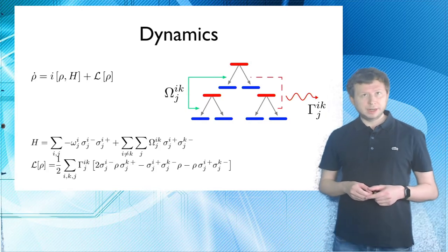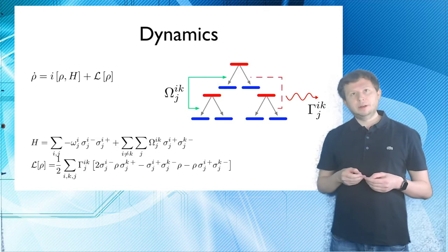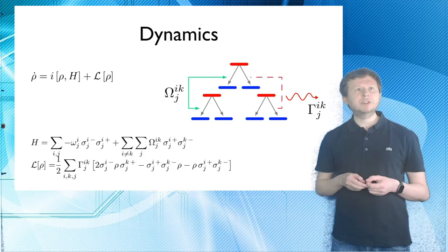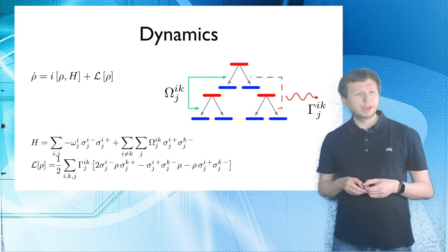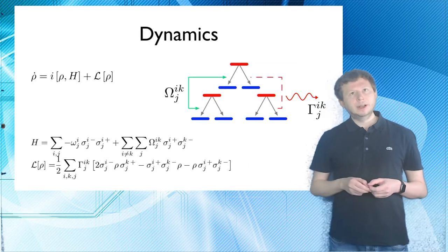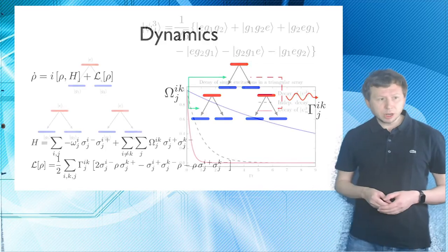Same is true for the Liouvillian. So again, we have gamma IK, which is sort of the combined spontaneous emission rate, the collective spontaneous emission rate between atom I and K. And we also sum over the individual transitions that are present in each atom. Okay. So this is our model.